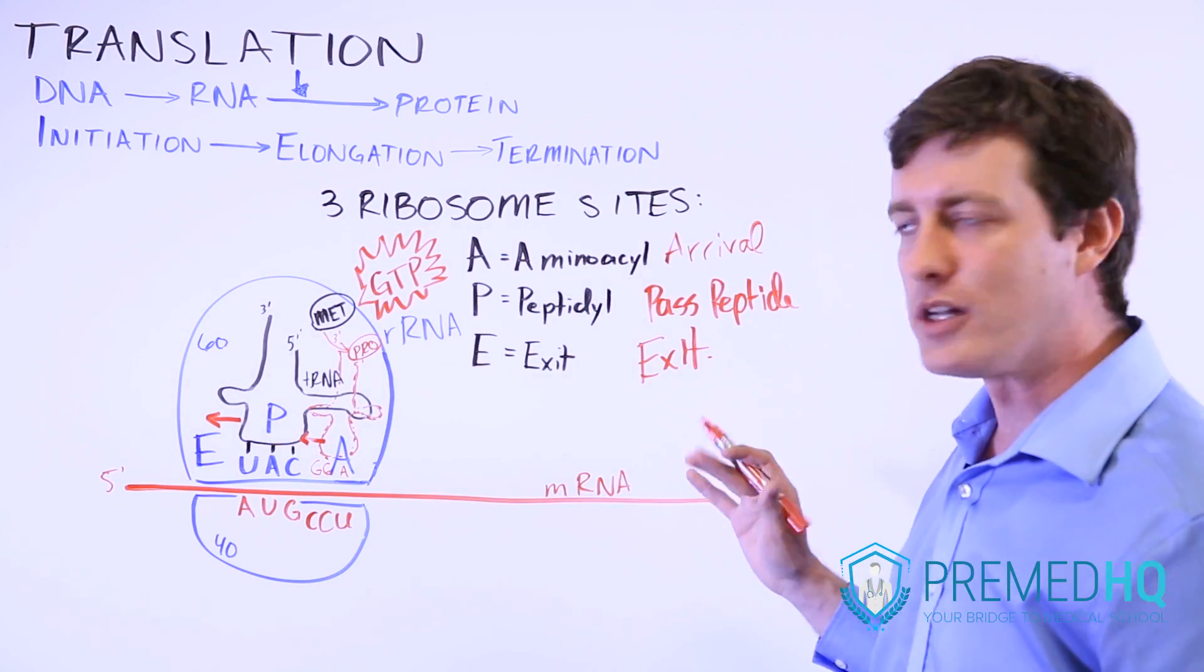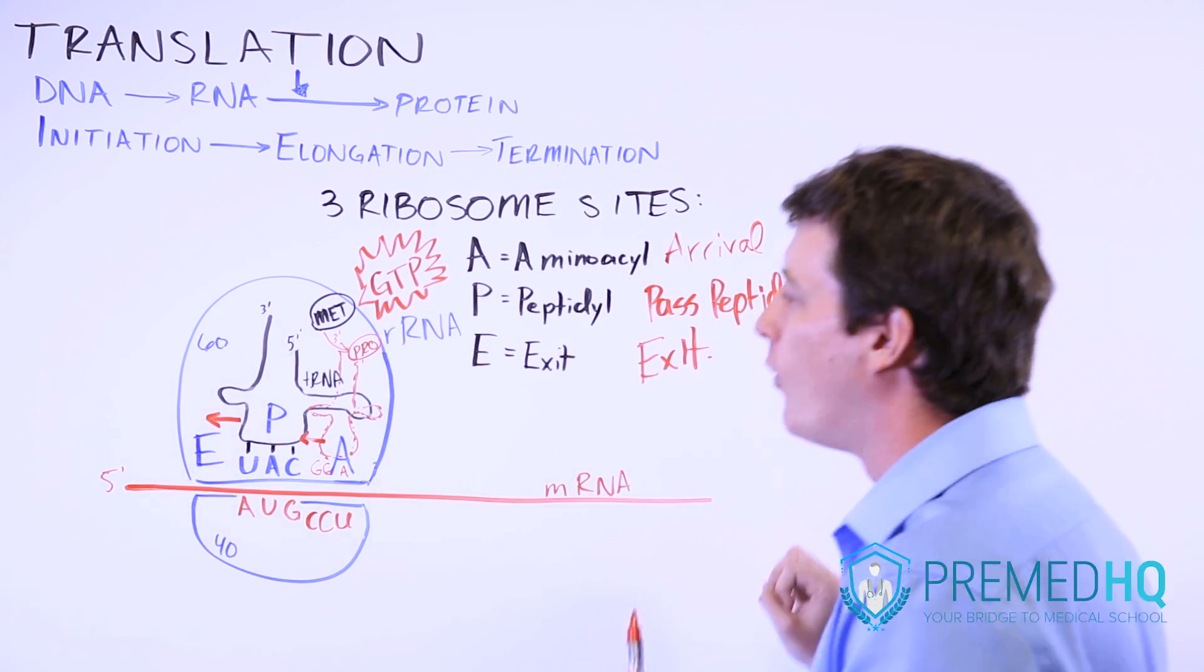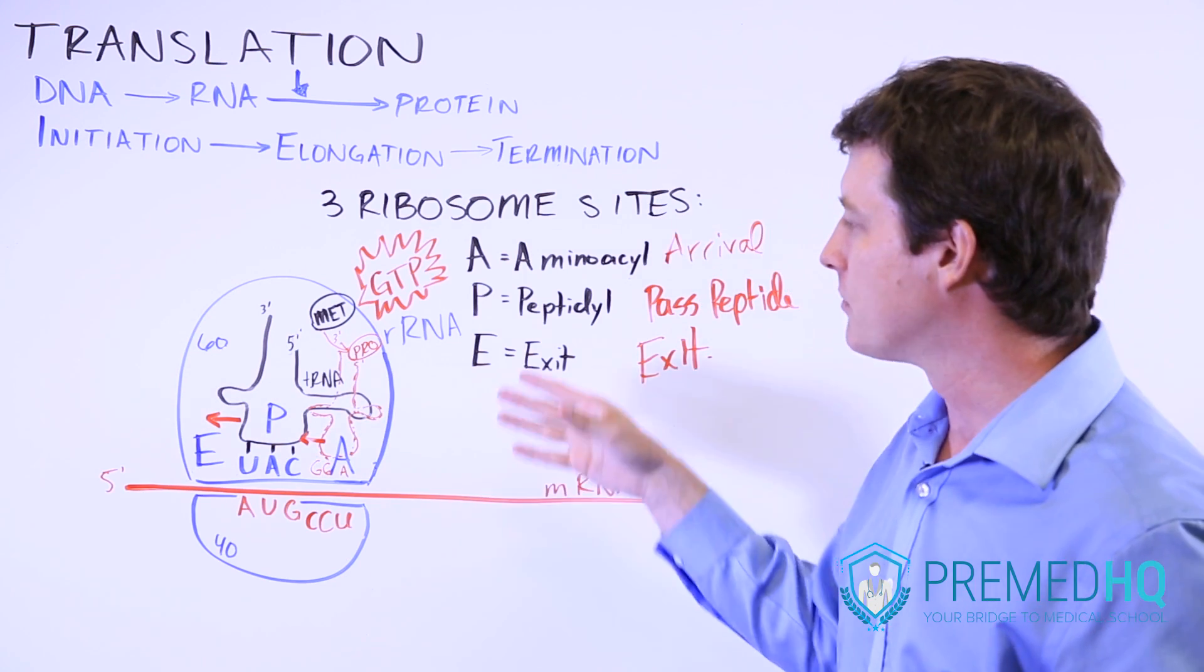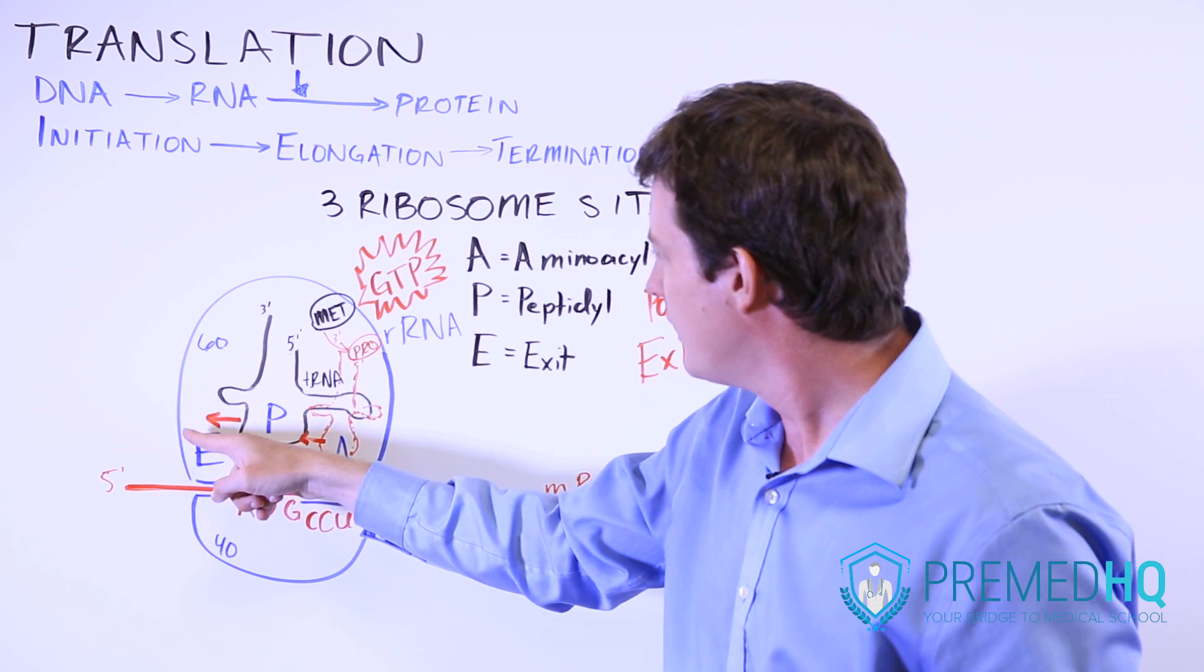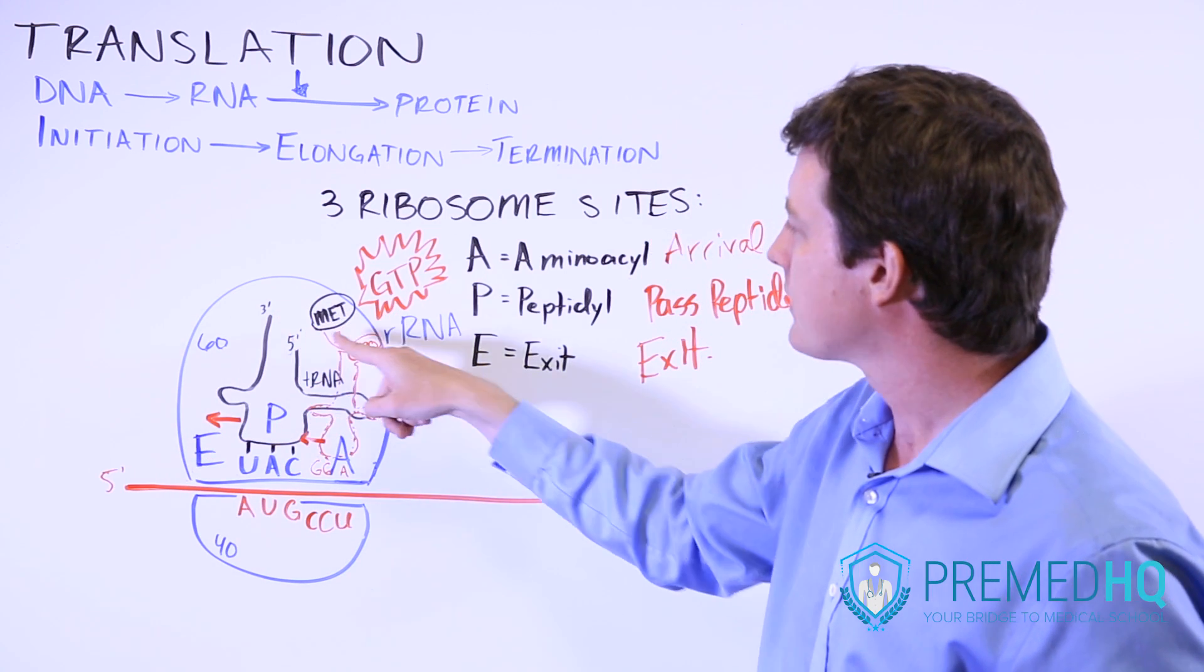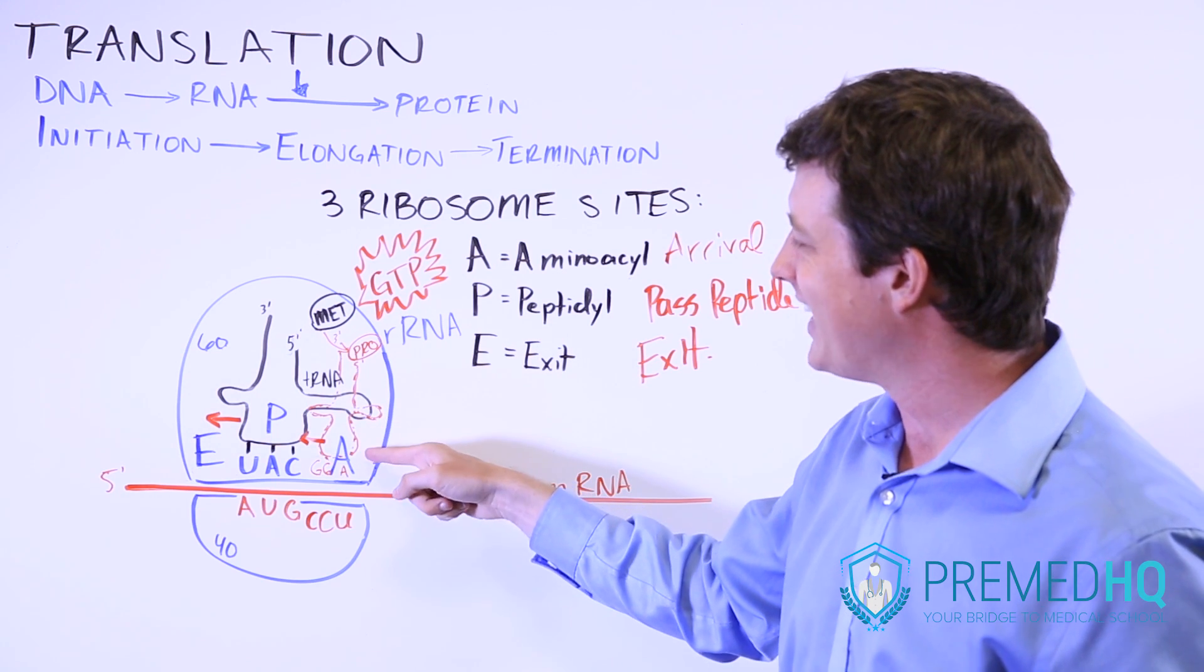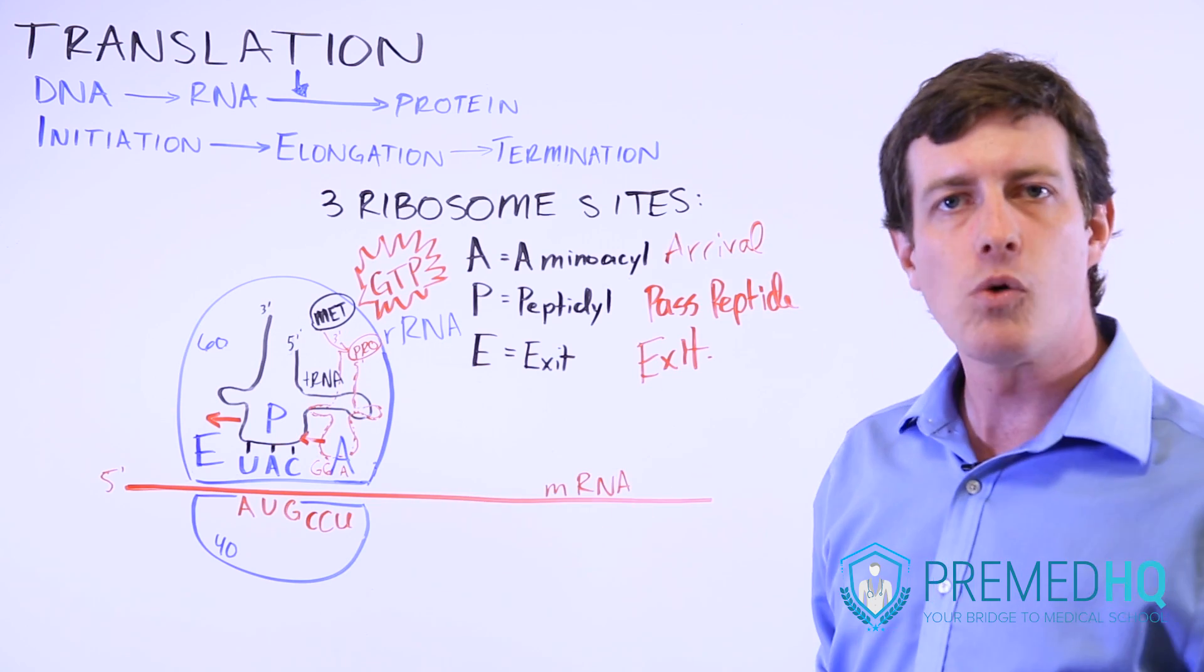So these all happen at once, and notice that this transfer all occurs while these things are shifting positions in the ribosome. So basically the P, as it moves over to the E site, will pass its peptide over to the A site. As that's going on, the tRNA in the A site will now be moving into the P site, and so on.